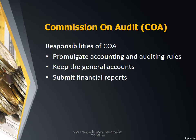First is the Commission on Audit. The COA is responsible for the promulgation of accounting and auditing rules. As mandated, the Commission on Audit shall have exclusive authority to define the scope of its audit and examination, establish the techniques and methods required therefor, and promulgate accounting and auditing rules and regulations including those for the prevention of disallowance of irregular, unnecessary, excessive, extravagant, or unconscionable expenditures or uses of government funds and properties. These types of expenditures will be discussed in the succeeding chapters.